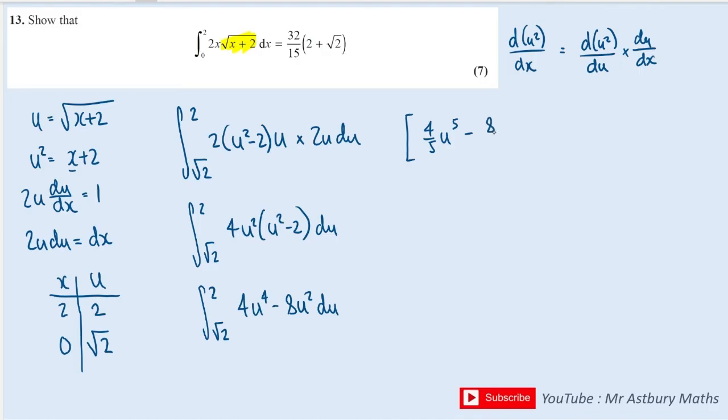Upping the power by 1 to make 3 gives 8/3 u cubed. That is between 2 and root 2.